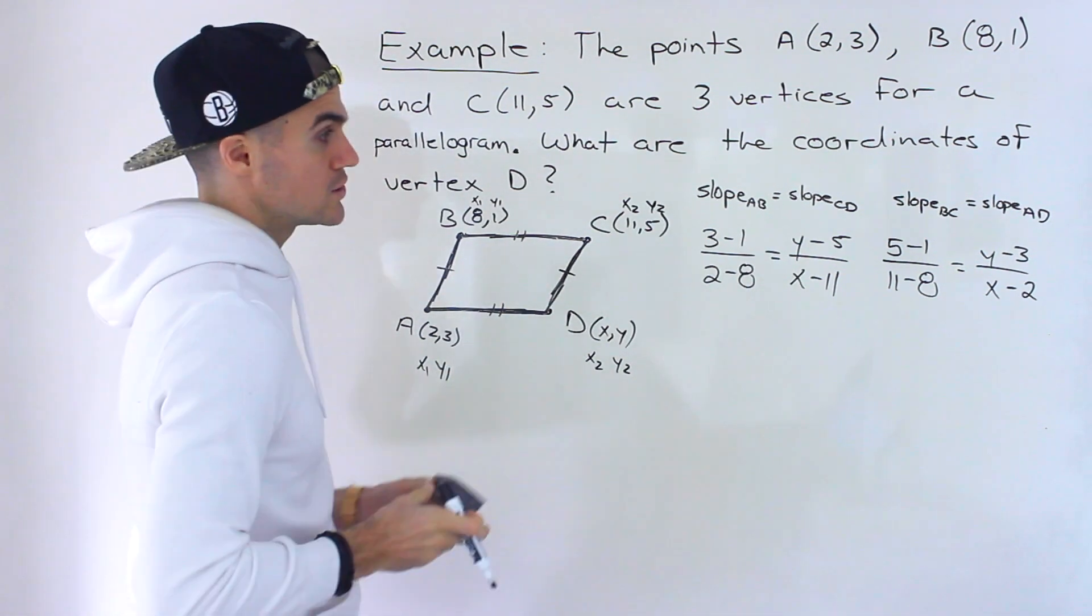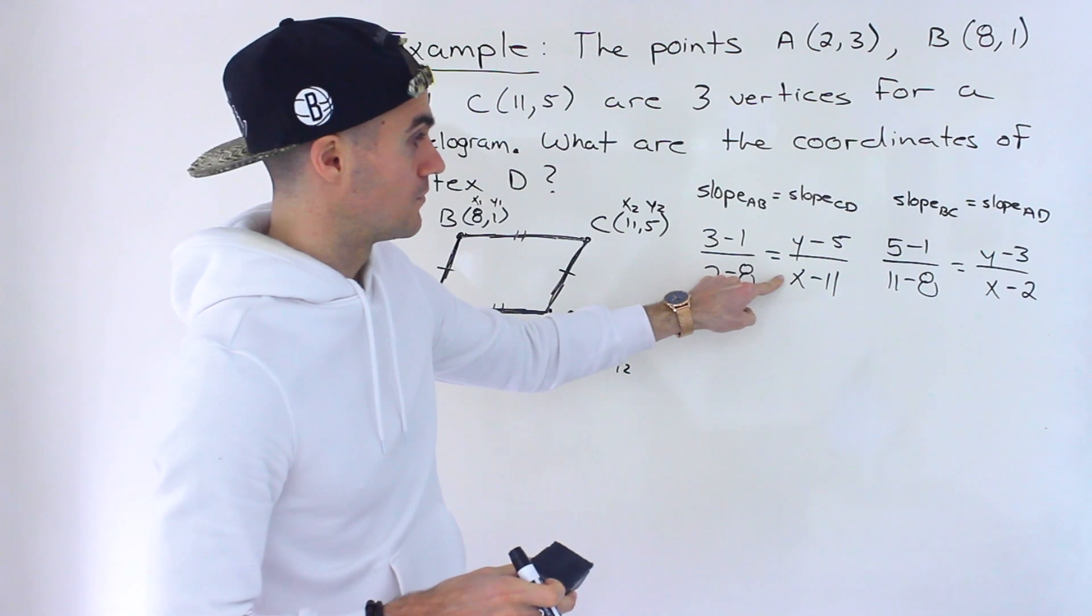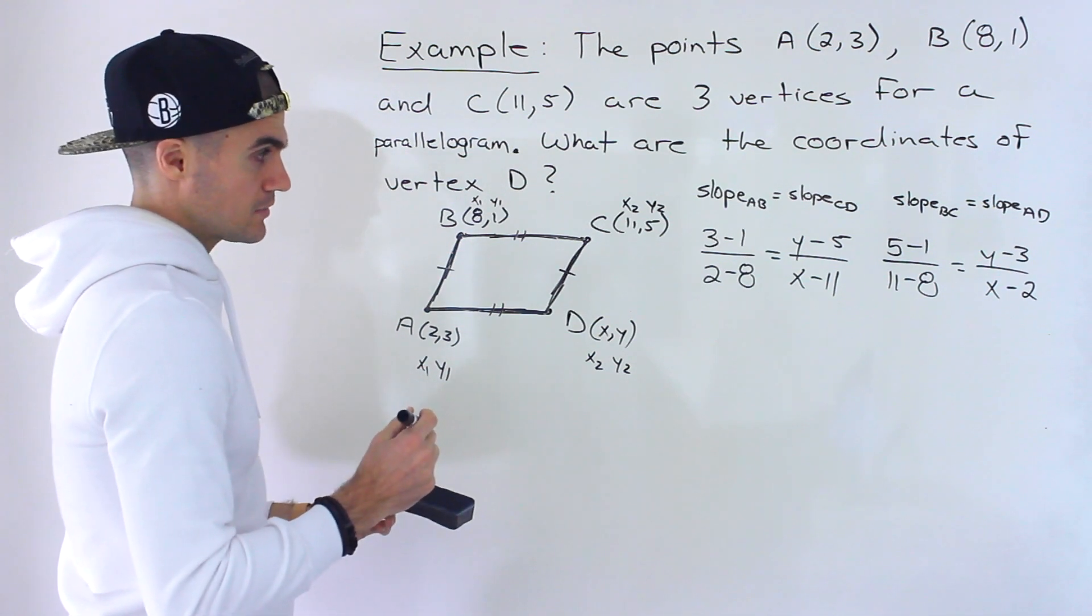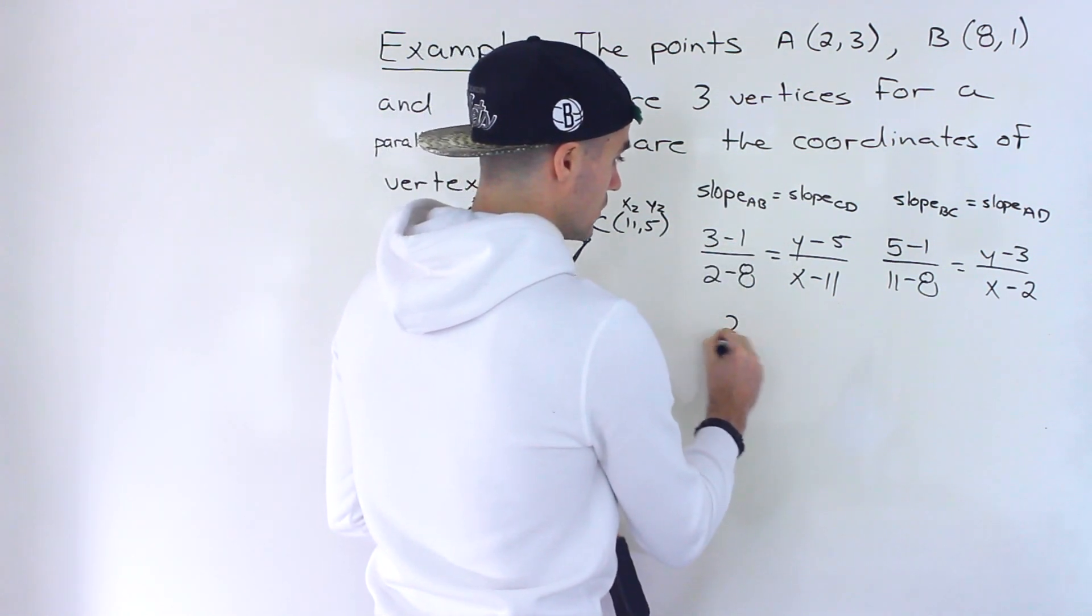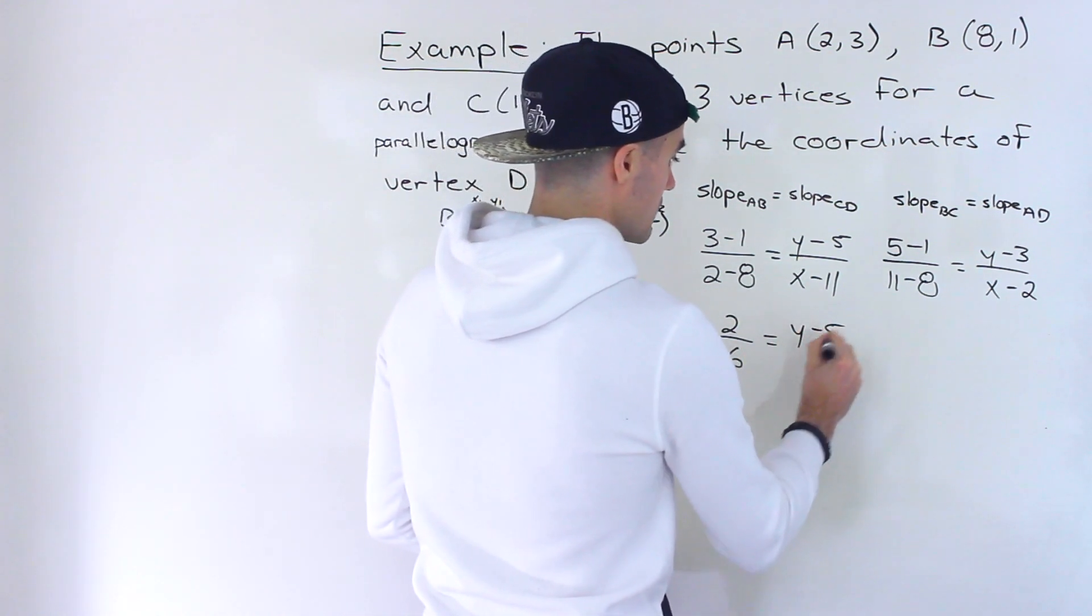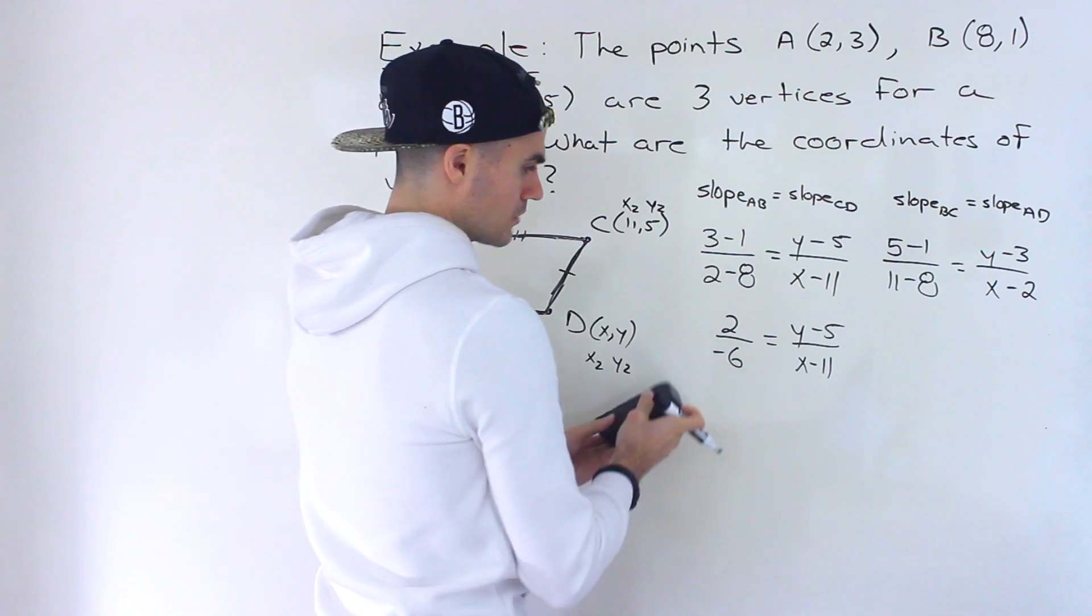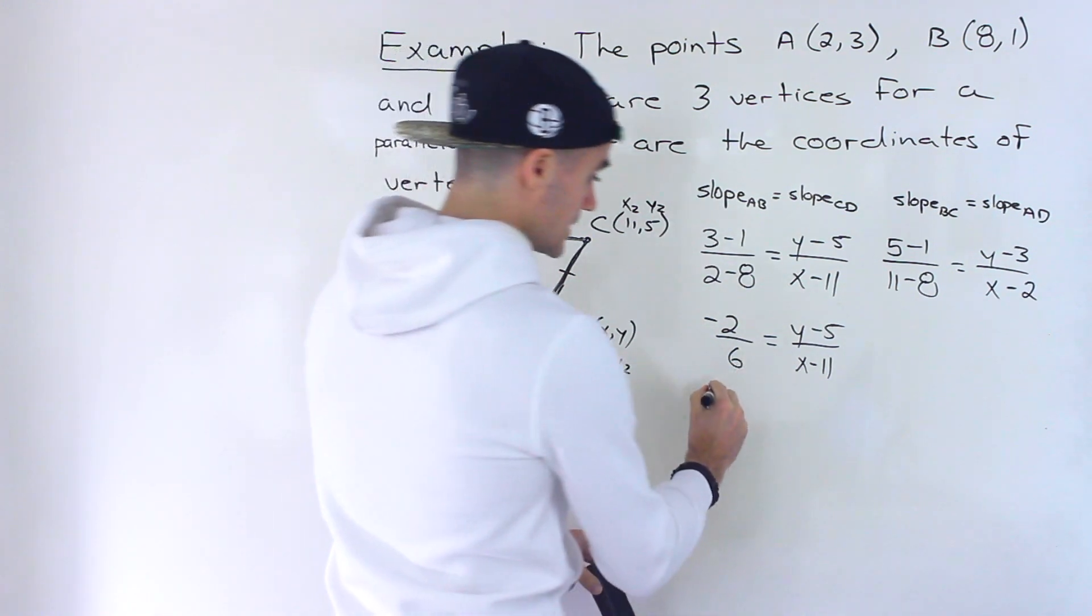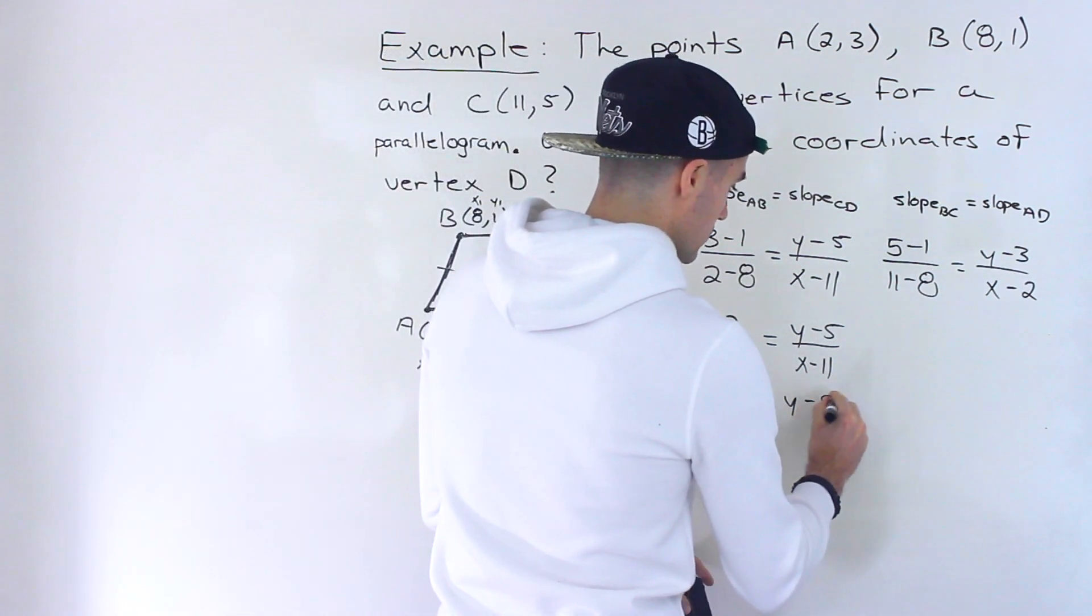And those are the two equations. So two equations, two unknowns that we could solve for. And now we know what to do algebraically. So to simplify this, what you want to do is first simplify this side. So 3 minus 1 is 2, 2 minus 8 is negative 6. And then we'll have Y minus 5 over X minus 11, like that. This negative you could put here, you could put here. I'm just actually going to just bring it up. And then actually negative 2 over 6, that simplifies to negative 1 over 3.